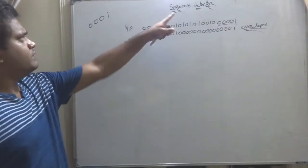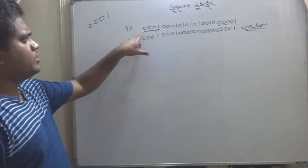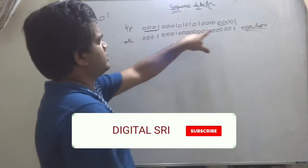Today I am going to explain about sequence detector 001. This is my input: 0, 0, 0, 1, 0, 0, 0. This is my input.